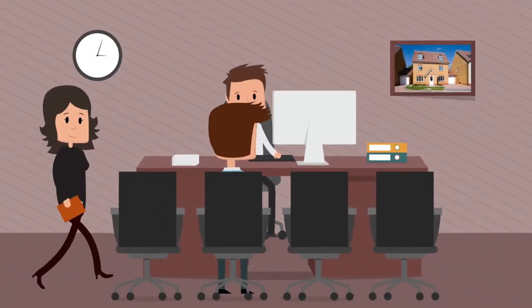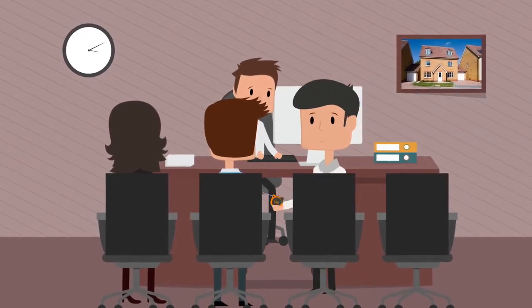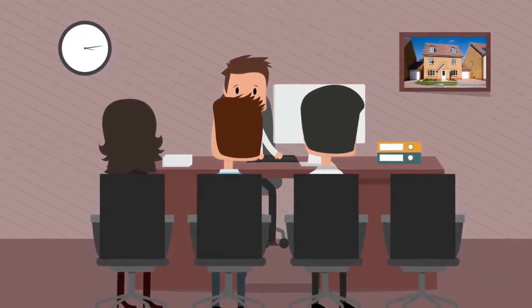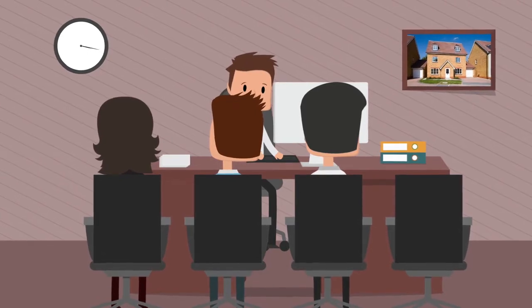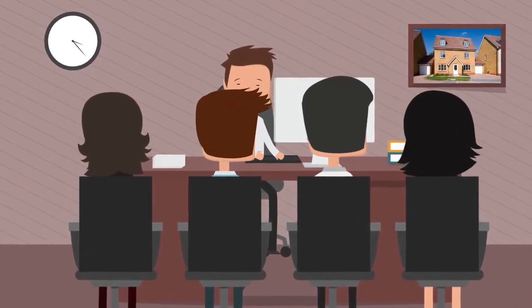When you buy a house, you have several advisors to help you. Your mortgage broker will help to find the best mortgage for you, your surveyor will advise you on the structure of the property, and your conveyancer will check that the title to the property is suitable for you and your lender.